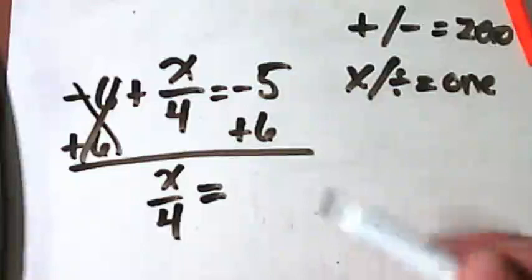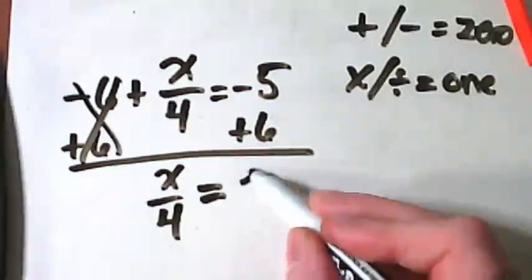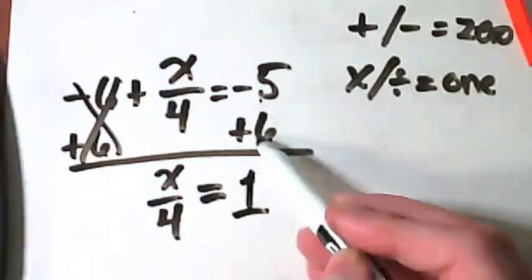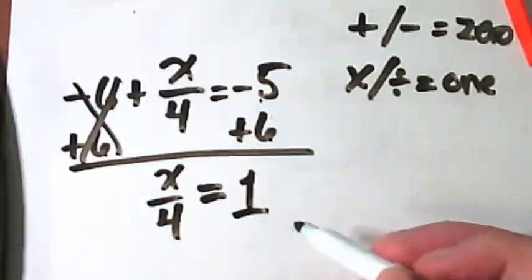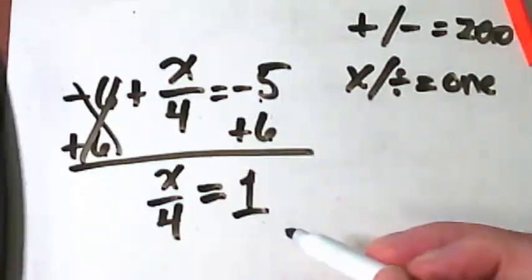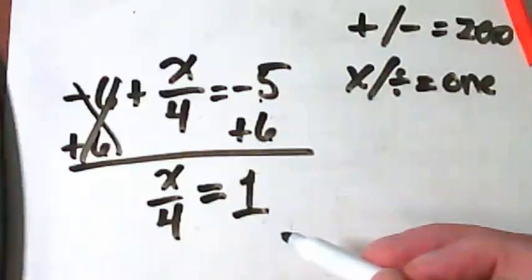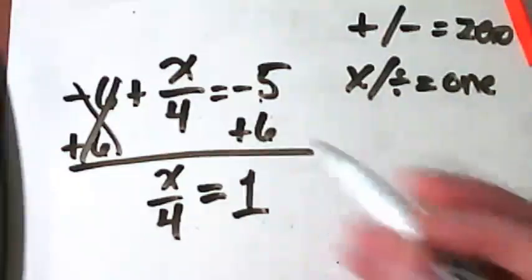What's left on the right side? One. Negative five, positive six. One. We have the same reciprocal that we had last time, don't we? Because it's still the variable over four.